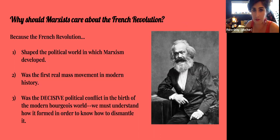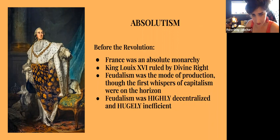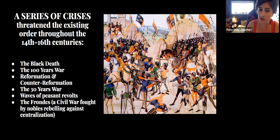Leading up to the revolution, France was an absolute monarchy — King Louis XVI ruled by divine right. Feudalism was the mode of production, though the first whispers of capitalism were on the horizon. Feudalism was highly decentralized and hugely inefficient. There were a series of crises throughout the 14th to 16th centuries: the Black Death, the Hundred Years' War, the Reformation, Counter-Reformation, the Thirty Years' War, waves of peasant revolts, and finally the Fronde — a civil war fought by nobles rebelling against centralization.